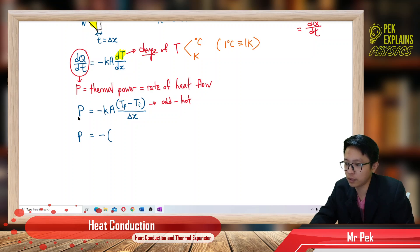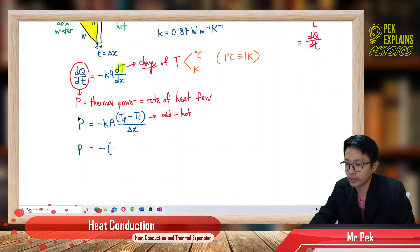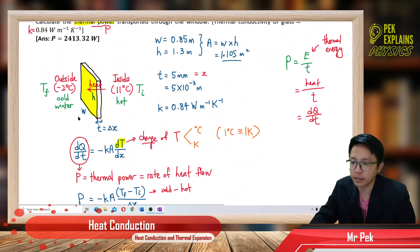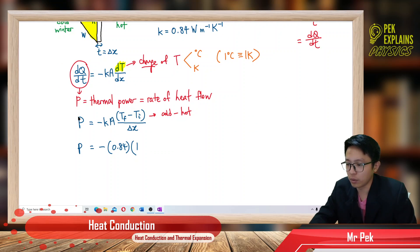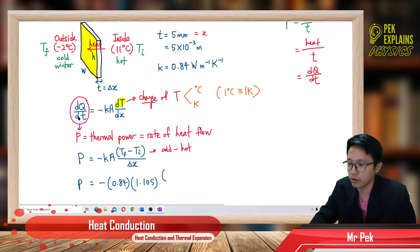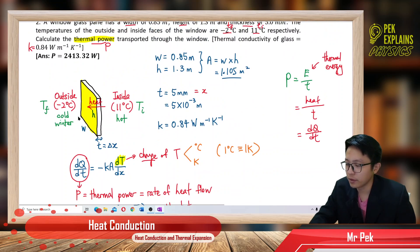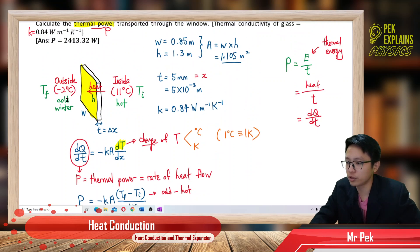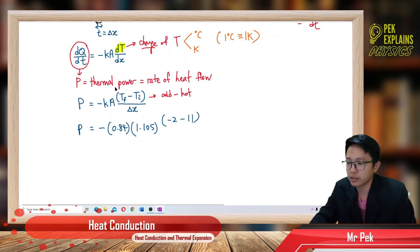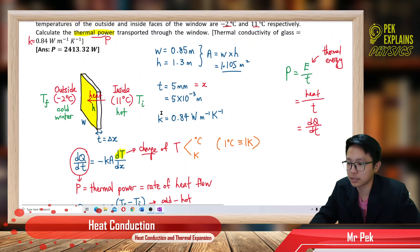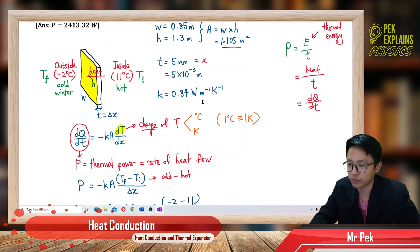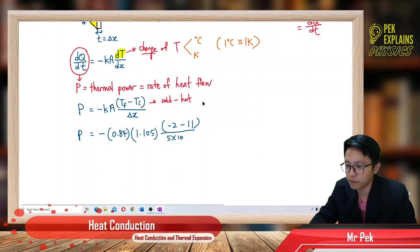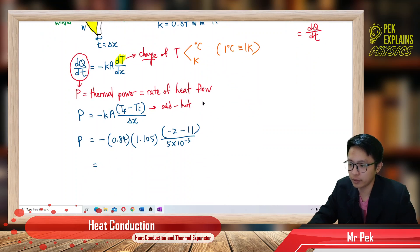The power equals negative K times A times (T_final minus T_initial) over X. Substituting: K = 0.84, A = 1.105, final temperature (cold, outside) = negative 2, minus initial temperature (hot, inside) = 11, over the thickness X = 5 × 10⁻³ meter. Everything is in SI units.